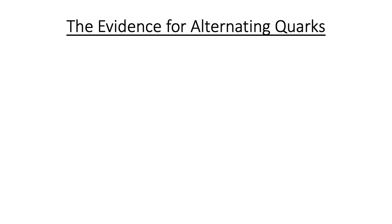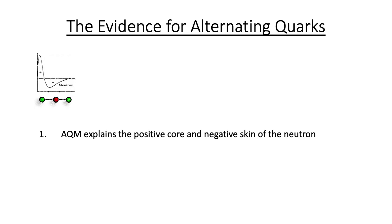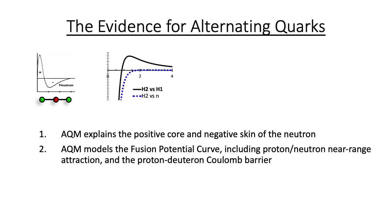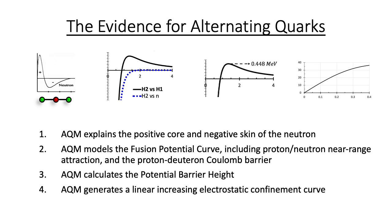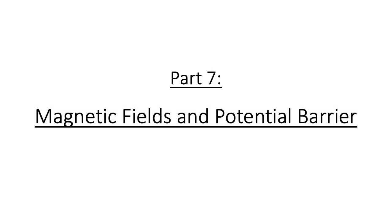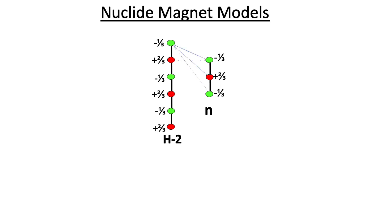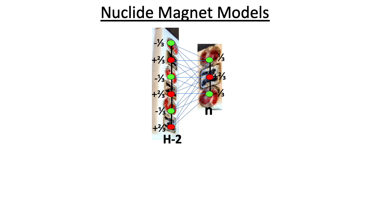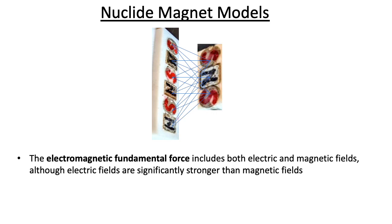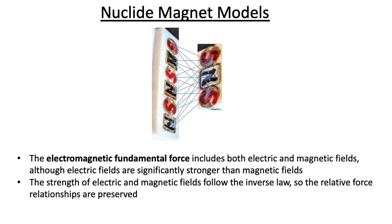Here is a brief review of the evidence for alternating quarks. A neutron comprising an alternating sequence of quarks explains its positive core and negative skin. AQM models the fusion curve for both the proton and the neutron, accurately predicts the height of the Coulomb barrier, and an alternating quark sequence generates a linear and increasing force that serves to confine quarks within the nucleus. The electric fields that interweave the quarks of fusing nuclei can be modeled using the magnetic fields produced by ordinary magnets, as both electric and magnetic fields are described within the electromagnetic fundamental force and follow the inverse square law — so the relative force relationships between magnet arrays are analogous to those between fusing nuclei.